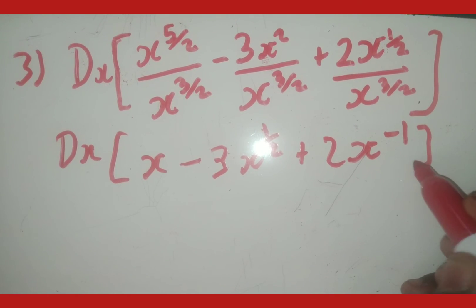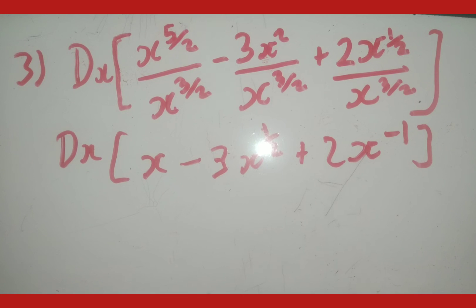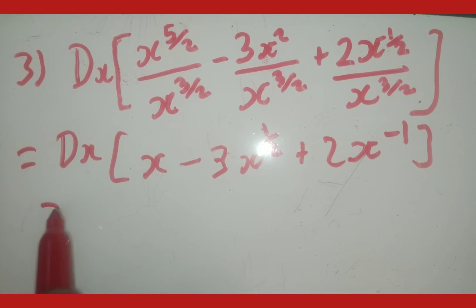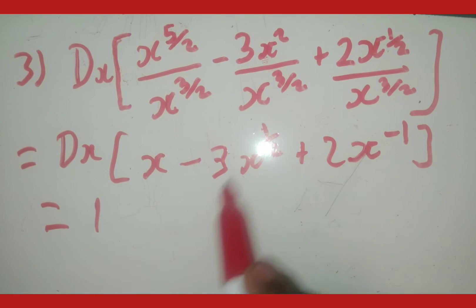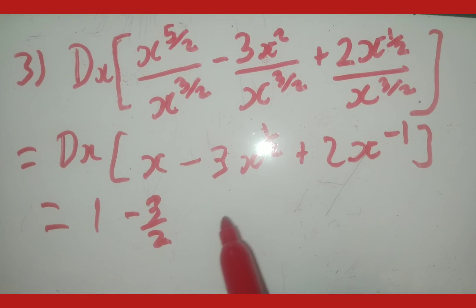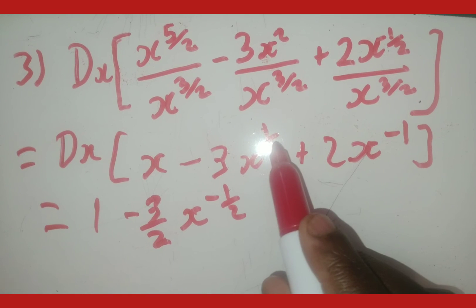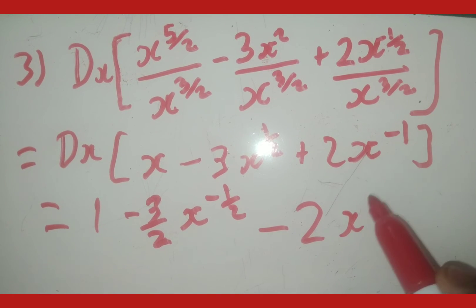We must write the exponent because it's negative. Now these are all in a differentiable form, so we can derive. When we derive, we remove the dx. The derivative of x is 1. The derivative of negative 3x to the one half is negative 3 over 2 times x to the power of 1 over 2 minus 1, which is negative 1 over 2. The derivative of 2x to the power of minus 1 is minus 1 times 2, giving minus 2, and the exponent becomes minus 2.